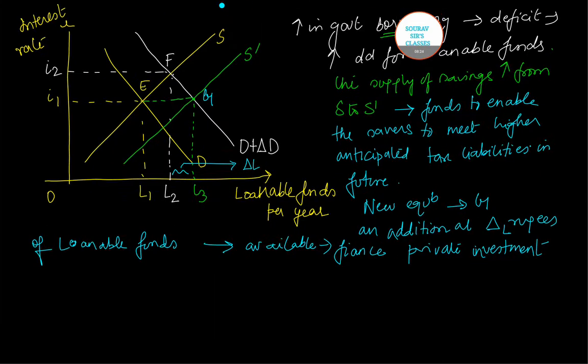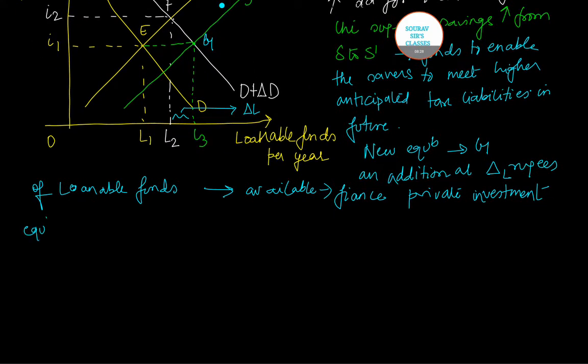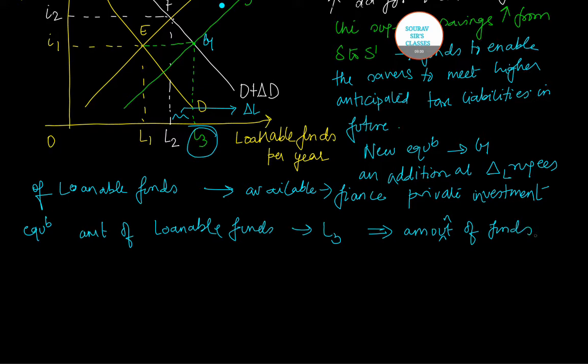So what we see, the equilibrium amount of loanable funds now becomes L3. The new intersection point gives us this amount of loanable funds, rupees per year. And if these extra funds are exactly equal to the amount of funds required to finance the deficit...